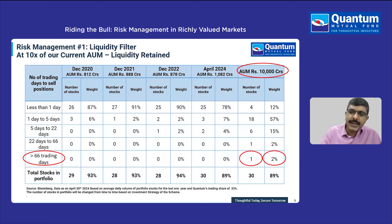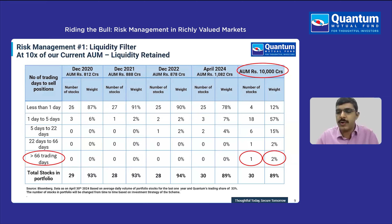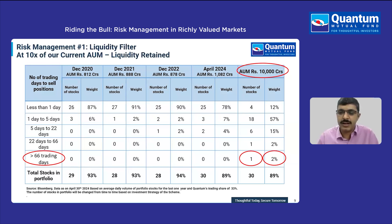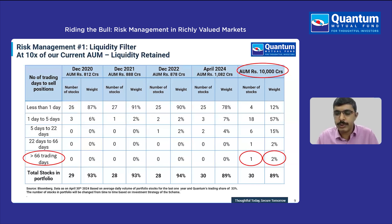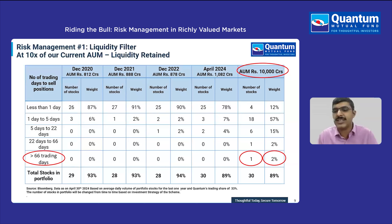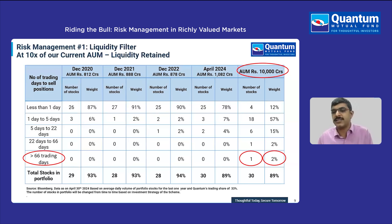Looking at the liquidity profile of the Quantum Long-Term Equity Value Fund, even if we were to grow to 10x of our current AUM, there is only one stock which breaches the criteria of requiring more than 66 trading days to add or liquidate a position. That means 98% of these stocks can be replicated even at 10x of our AUM, indicating that the historic performance and portfolio characteristics can be retained at a much larger AUM.